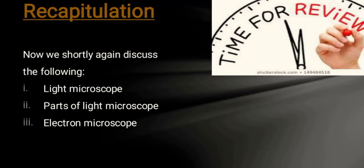The stage is where we put the object in the form of a slide. The adjustment screw is used with the objective lens to obtain a clear image. The base is the standard structure which provides support. The mirror directs light upward through the object.